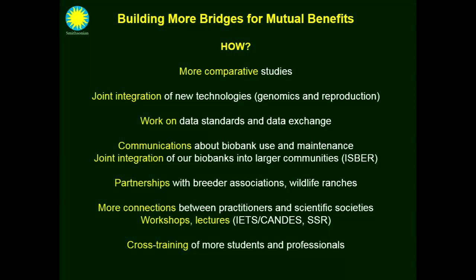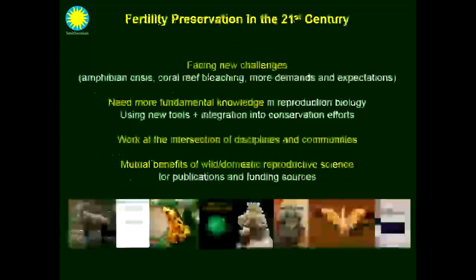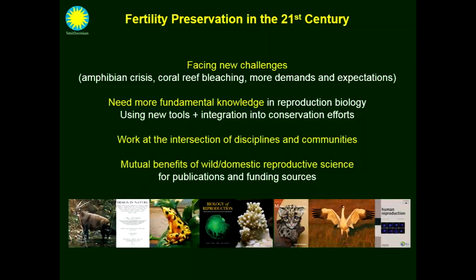Last but not least is really cross-training — training young people and professionals and making sure we have people who are really good at artificial insemination in a dairy cow but also have some knowledge in other species. I think that would help a lot to have this kind of dual competency in professionals. To conclude, this leads to how we see fertility preservation in the 21st century from our perspective.